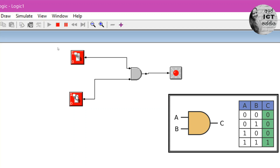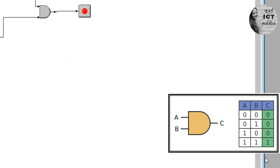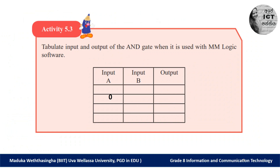Now you have to do activity 5.3. This is activity 5.3: tabulate the input and output of the AND gate when it is used with MM Logic software. These are the inputs, and when we feed these inputs to the AND gate, these are the outputs we can get.